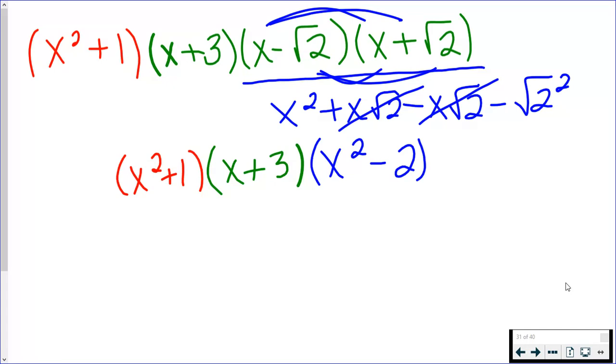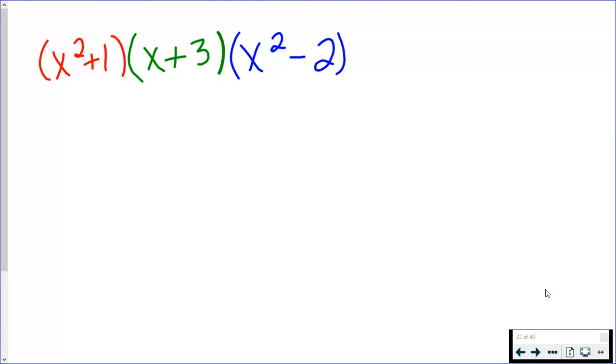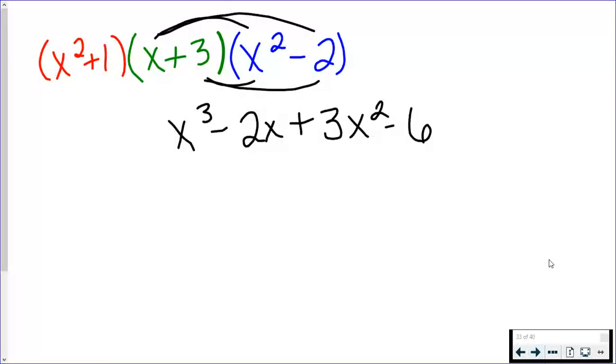I told you guys, if you like FOILing, you're going to like this problem. So we still have some FOILing to go. Now I am going to keep going. You can choose whichever two you want to FOIL together. I'm going to do (x+3) times (x²-2). So x times x² is x³, x times -2 is -2x, 3 times x² I get +3x², and 3 times -2 is -6. Now we are almost done.